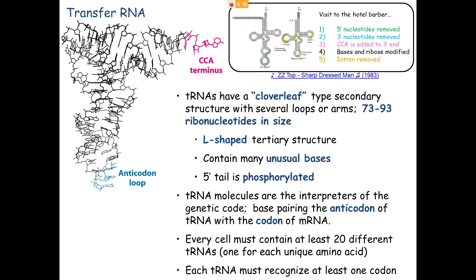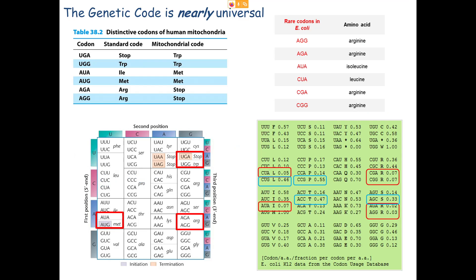Moving on to tRNA: there's a question about whether having six codons for leucine means leucine is more commonly used. Leucine is indeed a very common amino acid, but the degree of degeneracy doesn't correlate across the board with how frequently an amino acid appears in proteins. For example, aspartate and glutamate are very common amino acids but each has only two codons. And almost all proteins begin with methionine, yet there's only one codon for it.